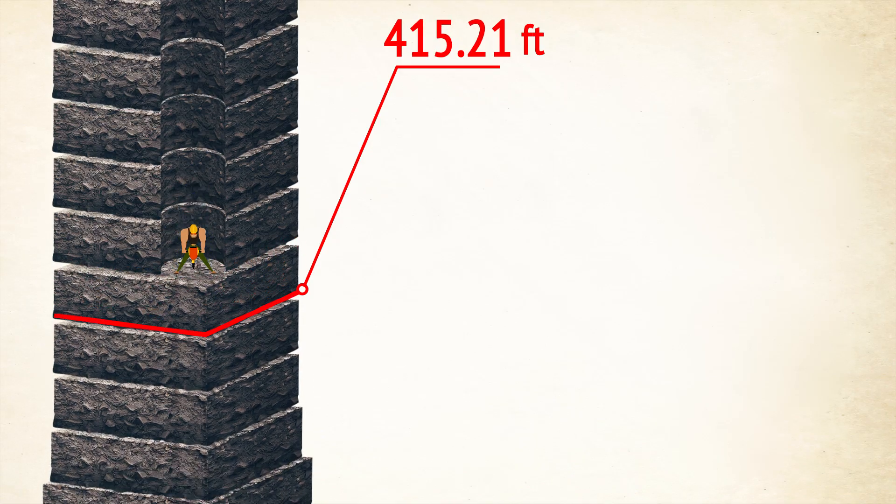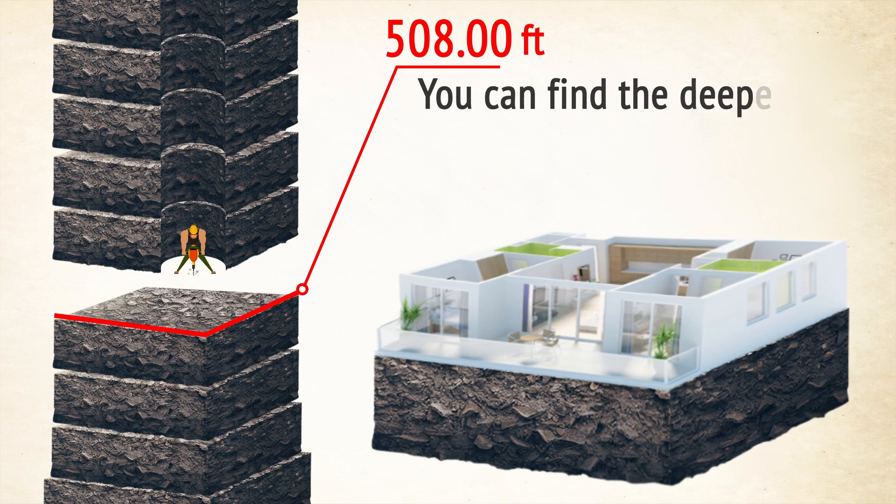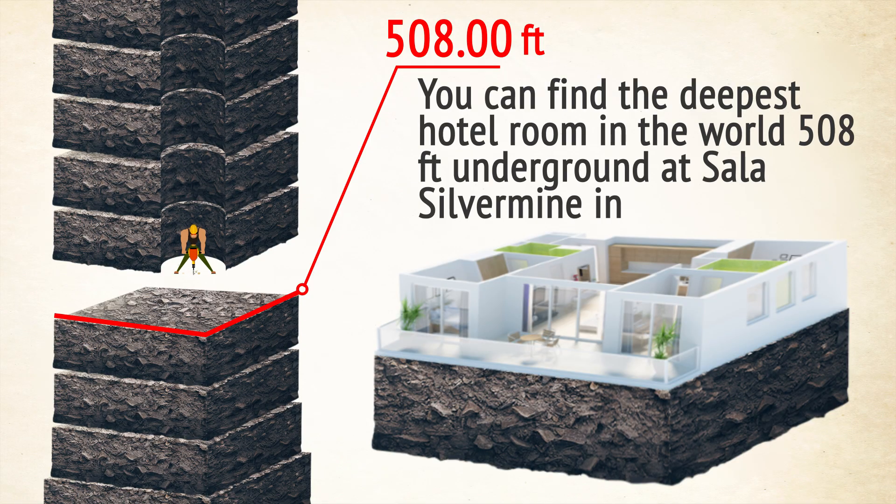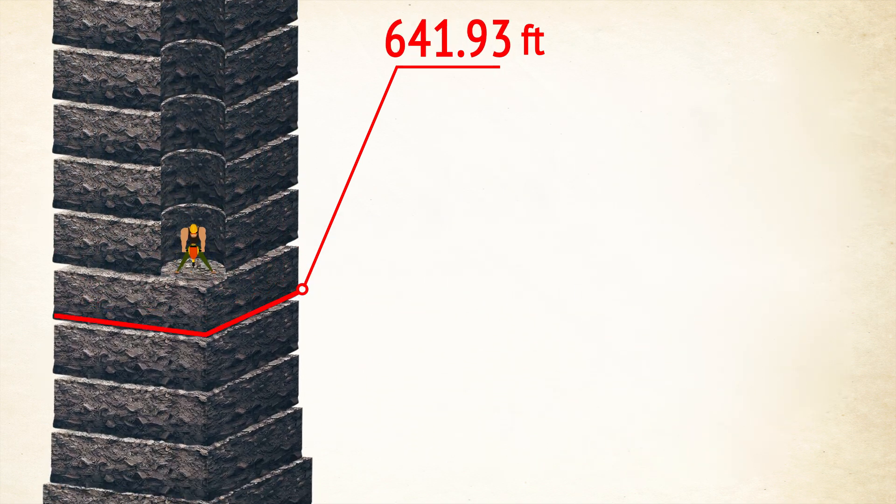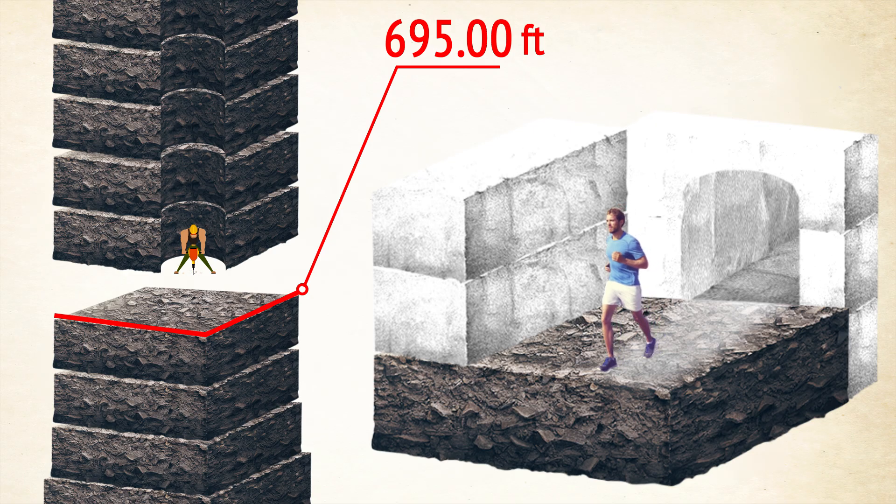But there's a hotel room that's situated even deeper than that. You can find the deepest hotel room in the world, 508 feet underground, at Sala Silver Mine in Sweden. Sounds crazy, right? But what will you say about the deepest half-marathon at a depth of 695 feet? It took place in 2004 at the Bochnia Salt Mine in Poland.